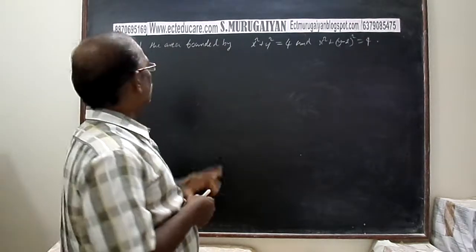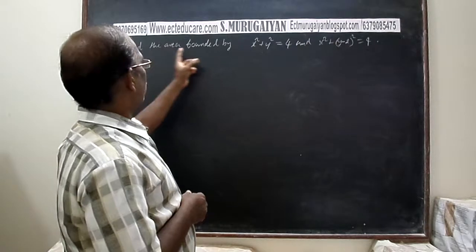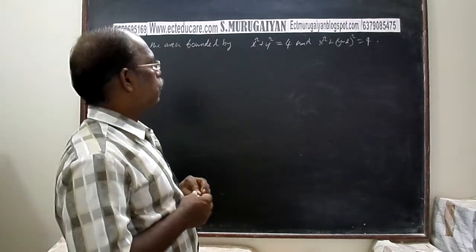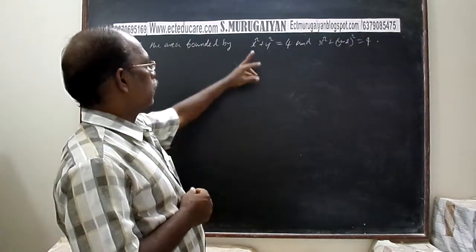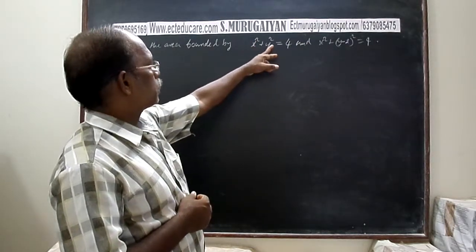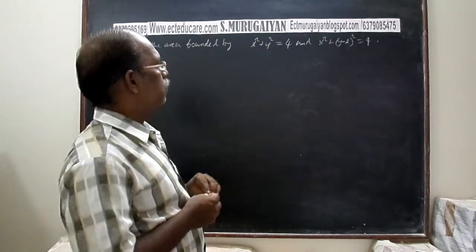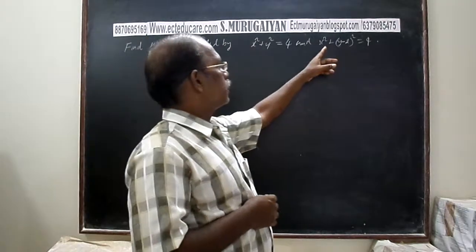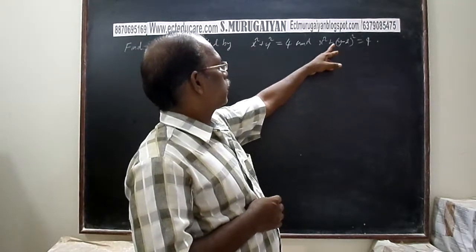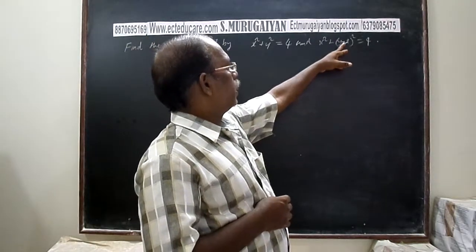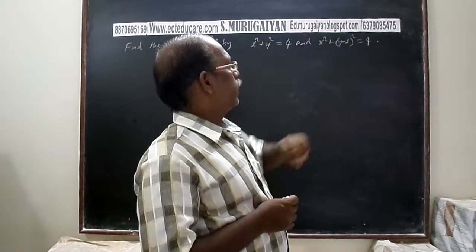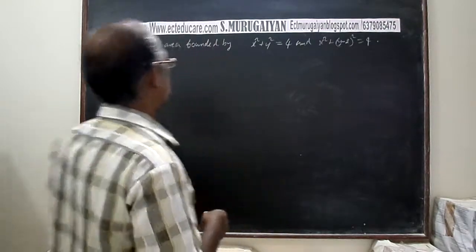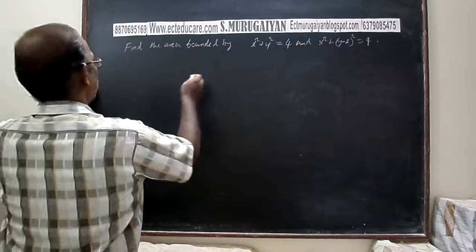Hello students. The question: find the area bounded by two circles — x² + y² = 4 and x² + (y - 2)² = 4.